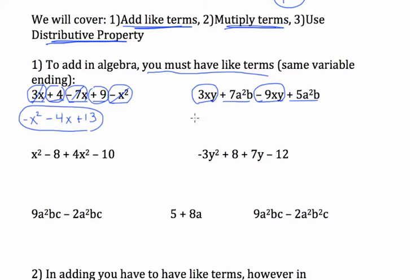And these two terms have the same ending. A²b, a²b. So 7 of them plus 5 of them makes 12 of them. That's your answer.